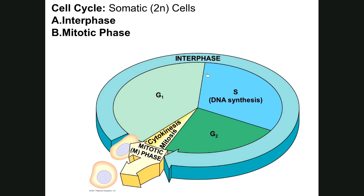This diagram shows interphase with G1, S phase, and G2. After interphase, there is a second major phase called the mitotic phase. Only somatic diploid cells go through this type of cell division — for growth and development and for tissue renewal, such as healing of a wound or replacement of skin cells. This type of cell division begins with the somatic diploid parent cell and produces two identical daughter diploid cells.